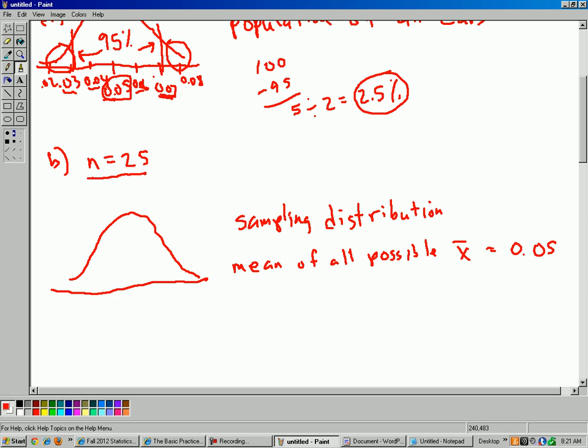And keep in mind what this means. It's all the possible x-bars that you could get from a sample of size 25. Now the mean of the sampling distribution, so the mean of all the possible x-bars is going to be 0.05. Because when you take a sample, some are too high, some are too low, some are just right. On average, it's going to be the same as the population average. And then some samples will be a little too high, some samples will be a little bit too low. On average, of all the samples, it will be the same as the population mean. We could say the mean subscript x-bar, meaning the mean of all the possible x-bars is 0.05.